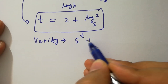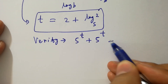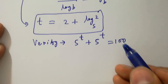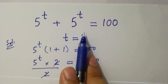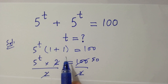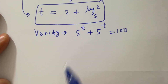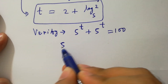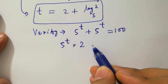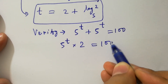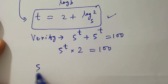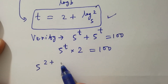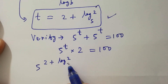In the next step I am going to verify 5 to the power t plus 5 to the power t equals 100. Factoring out 5 to the power t, we have 5 to the power t times 1 plus 1, which is 5 to the power t times 2 equal to 100. Substituting the value of t, 5 to the power 2 plus log 2 to the base 5.